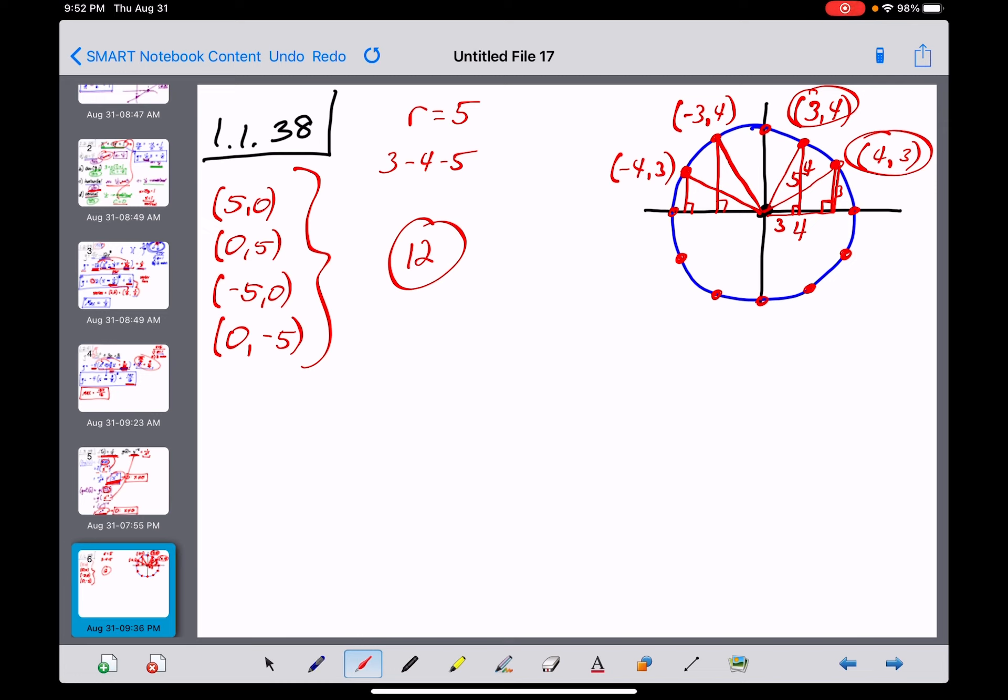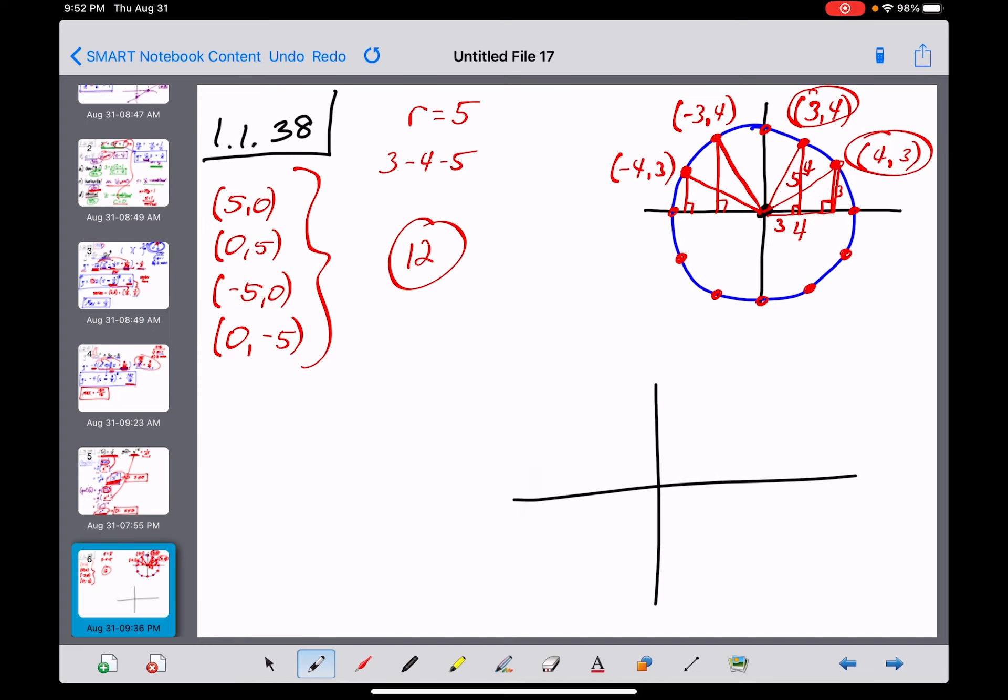Now, the second part to this problem, if I remember this right, here we go, is they wanted you to do this from a particular ordered pair instead of from the origin. So this one is now 5 units away from the point (2,3). So I'm not going to do this whole thing with you guys because it's really the exact same concept right here.